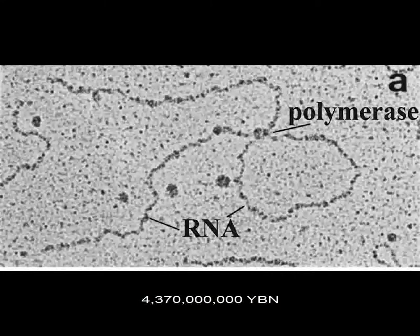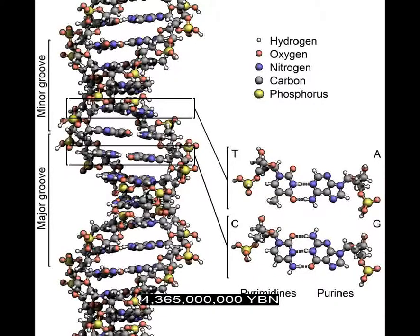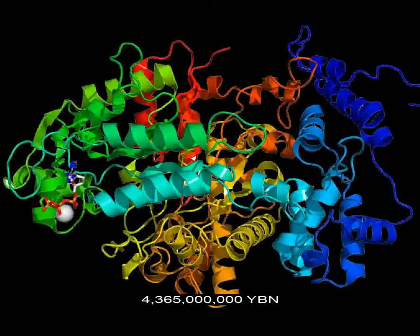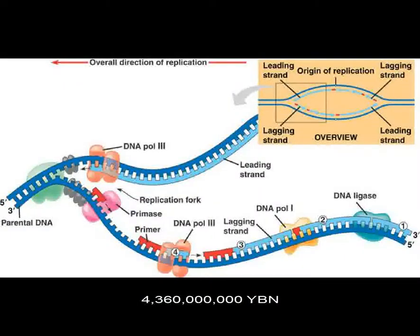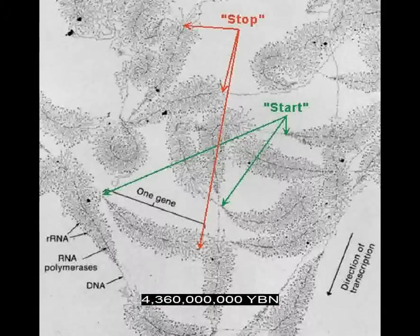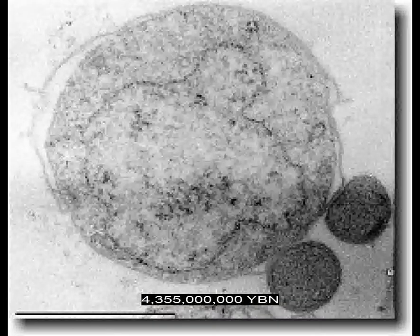A protein can copy RNA. This protein is called an RNA polymerase and may be more efficient than RNA itself at copying other RNA molecules. The first deoxyribonucleic acid, DNA molecule. A protein evolves that allows DNA to be assembled from RNA. A protein can copy DNA molecules — a DNA polymerase. Transcription: a protein assembles RNA from DNA. The first cell on Earth — a bacterium.